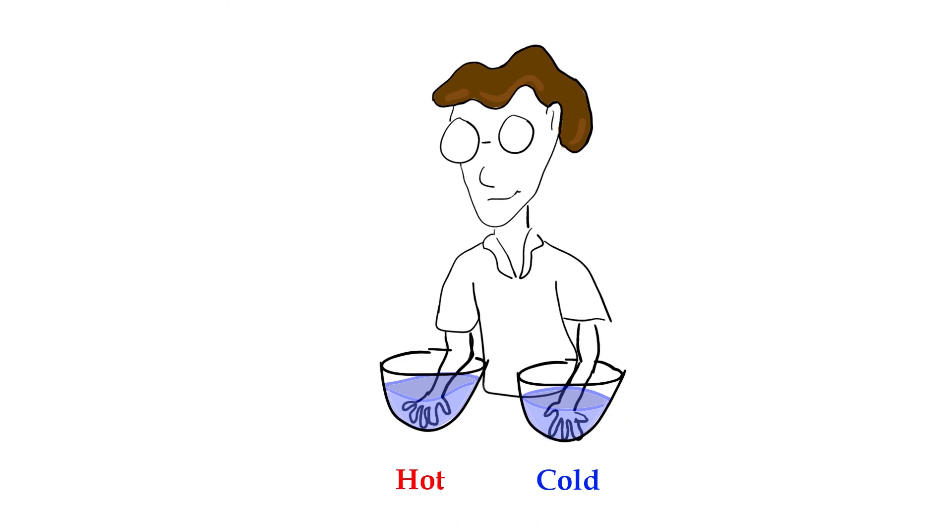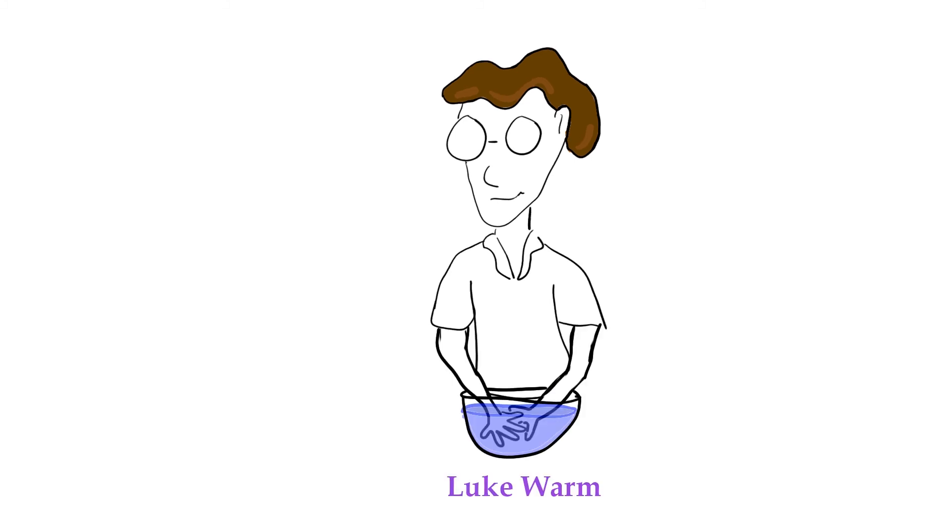So we have two types of thermoreceptors throughout the body. We have hot and we have cold. And both are able to undergo adaptation. And we could test this by putting both our hands in two different temperature waters. So let's say we put one hand in hot water, another hand in cold water, and leave it there for a little while. Those receptors will adapt to that temperature.